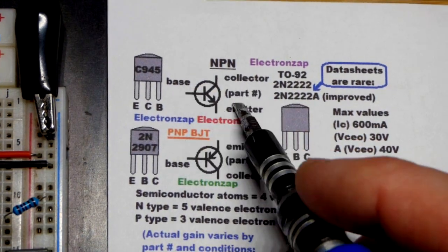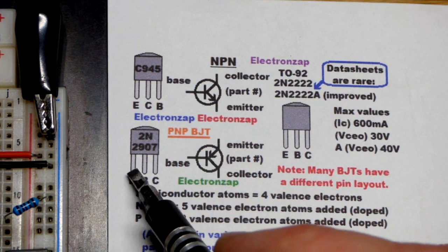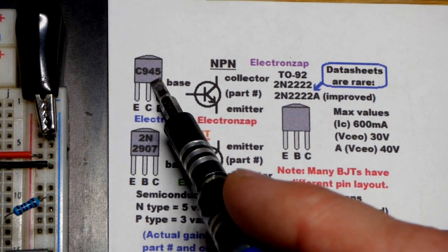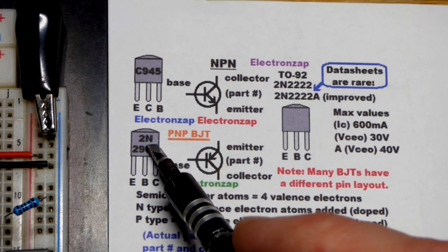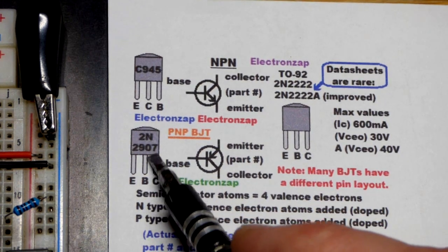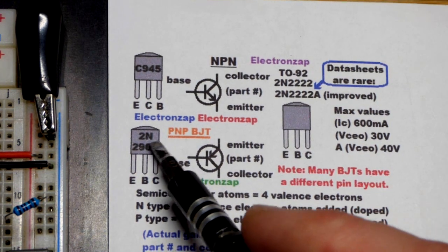I mentioned the words collector, base, and emitter earlier. That is the pins, the terminals. The pin layout will be different for different transistors. But if it starts with 2N, the emitter is probably to the left, the base is in the middle, and the collector is to the right. That's if it's a bipolar junction transistor.